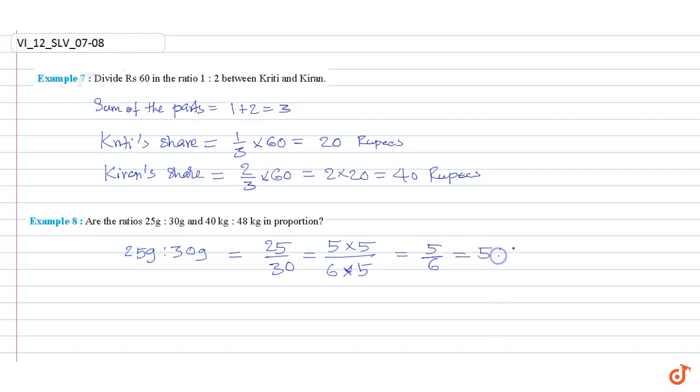40 kg to 48 kg equal to 40 divided by 48, which is equal to 5 into 8 divided by 6 into 8, which is equal to 5 by 6.